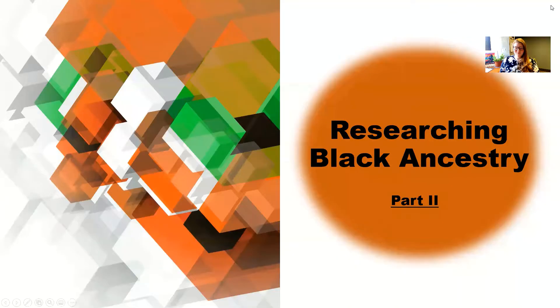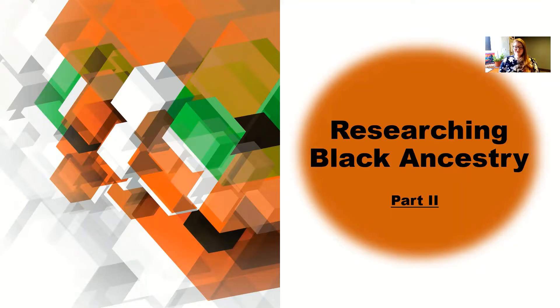Hi, my name is Miranda Vaughn and I am the reference and archives librarian here at the Mississippi Library Commission. You are watching part two of our four-part series on researching Black ancestry. So let's get started. If you watched our first video, part one, it was just an introduction and overview of how to get started with researching Black ancestry, some information about genealogy, some tips, and a general introduction to the work we're going to be doing here.